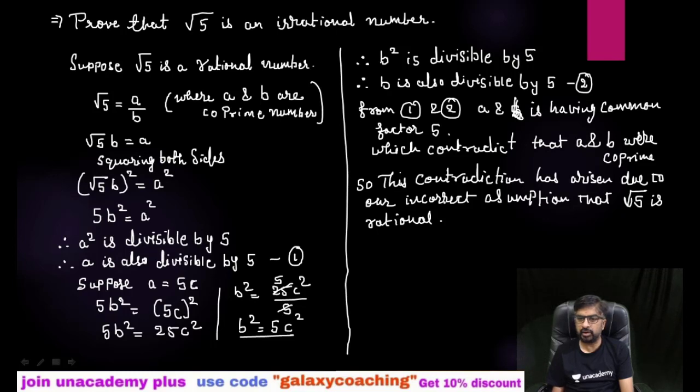So if root 5 is not rational, therefore you can say that root 5 is an irrational number.